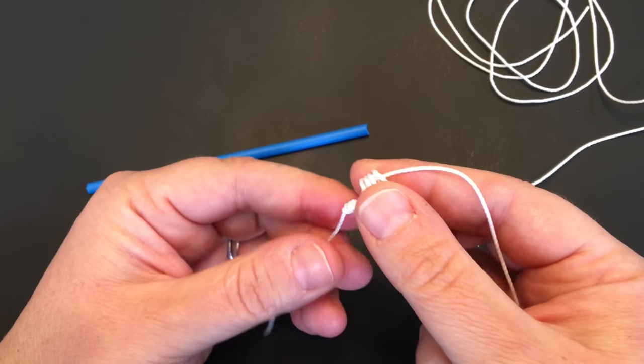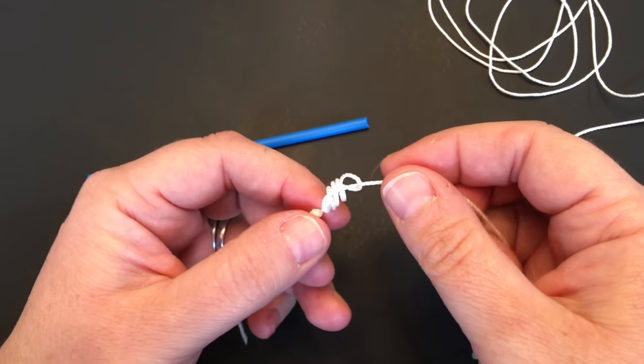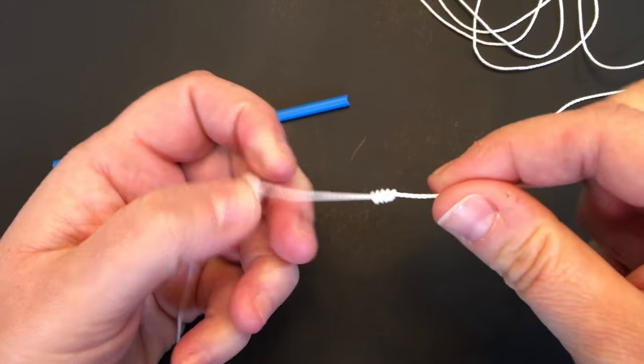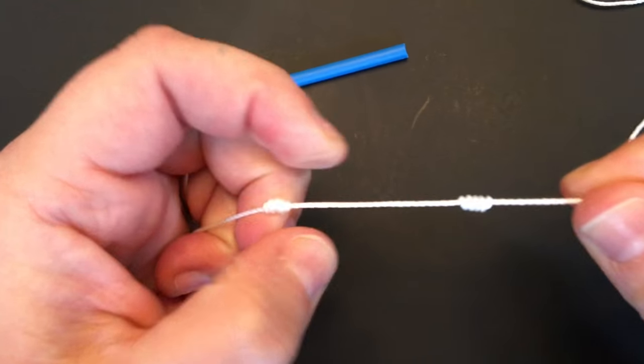Draw the loops into a nicely aligned barrel knot.